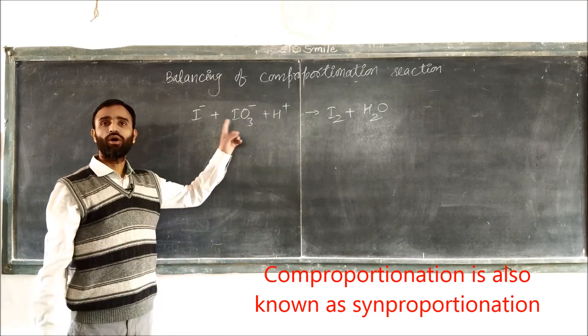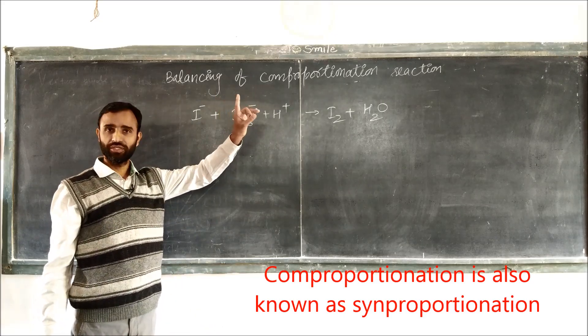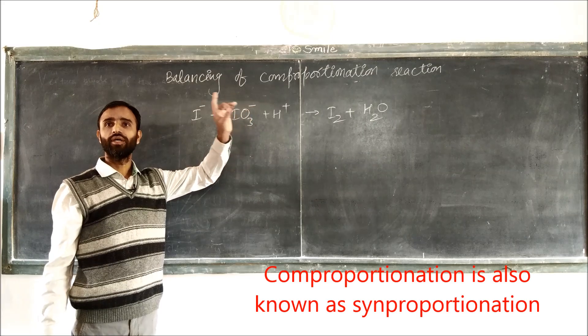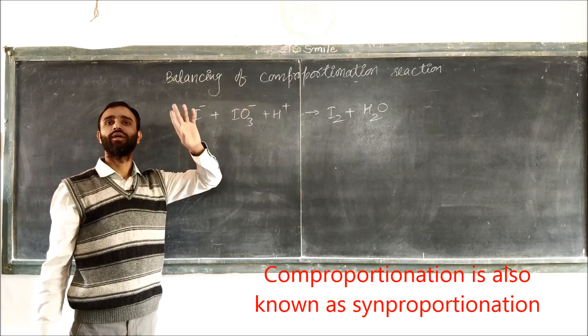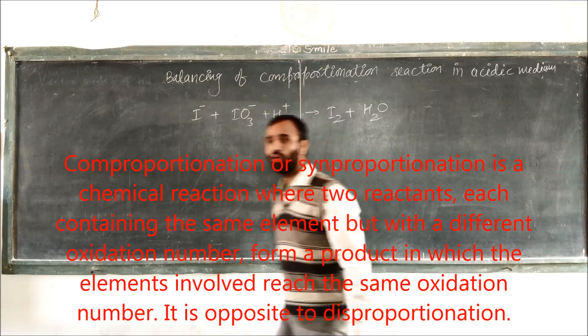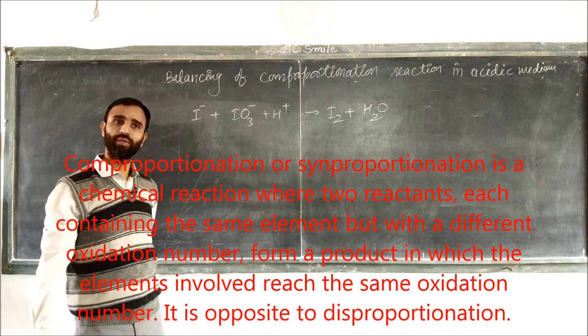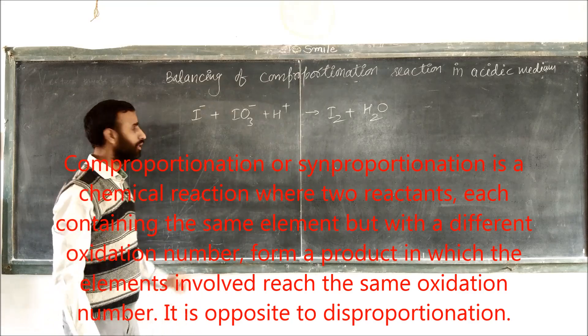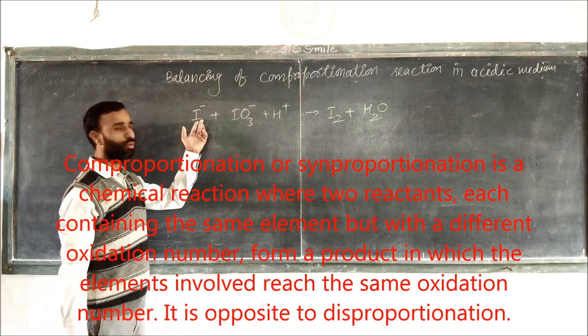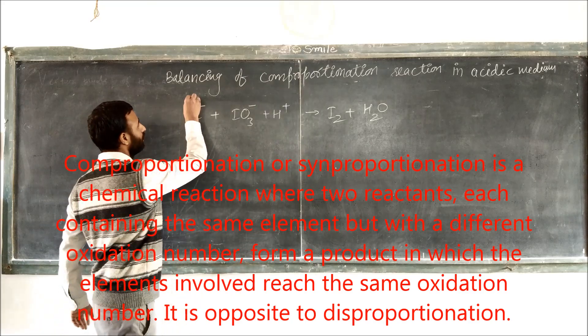Balancing of comproportionation reaction in acidic solution. First of all, write down the oxidation number. What is the oxidation number of iodine? Minus 2.